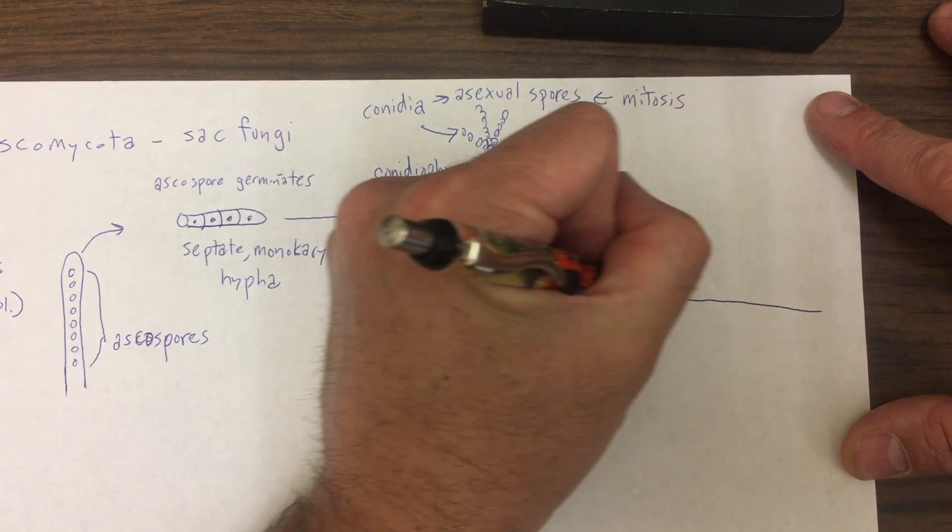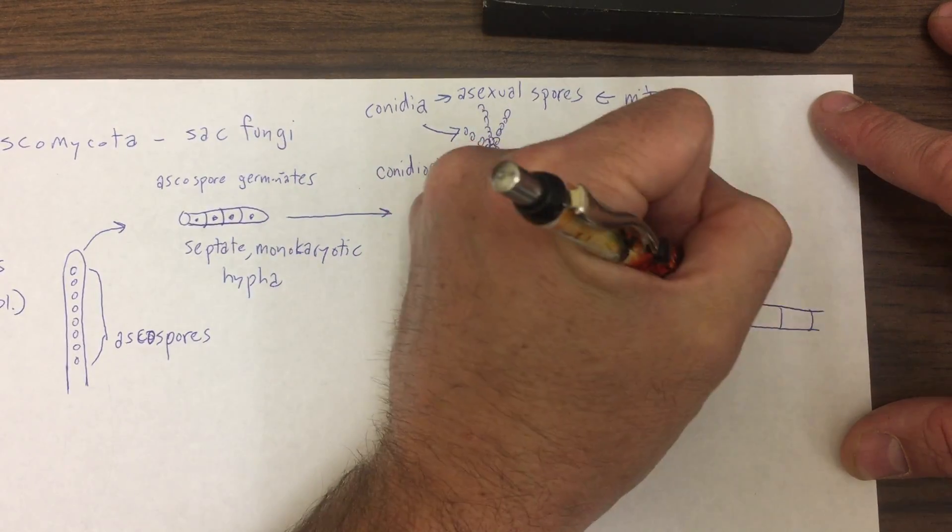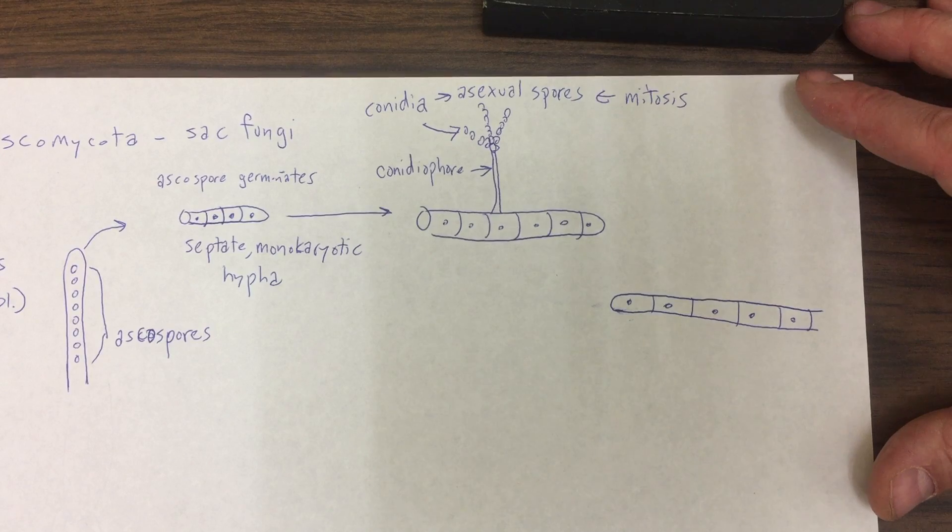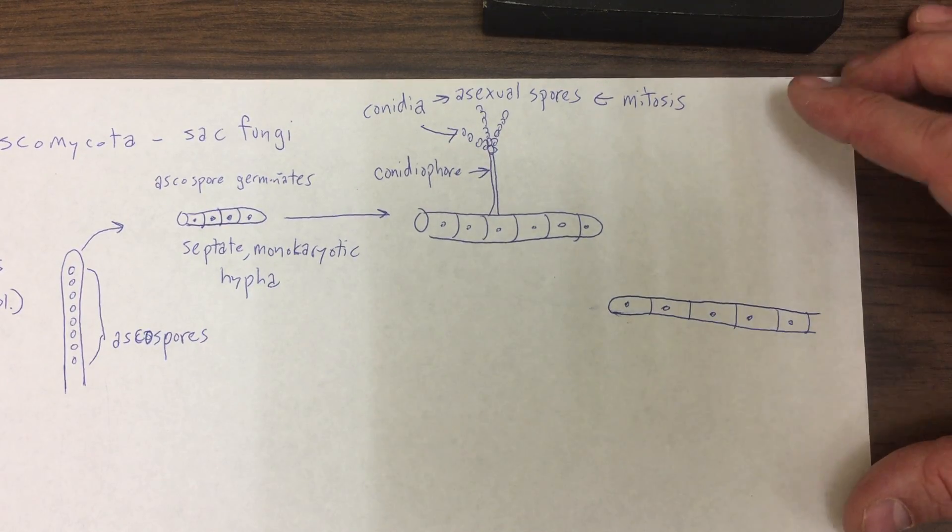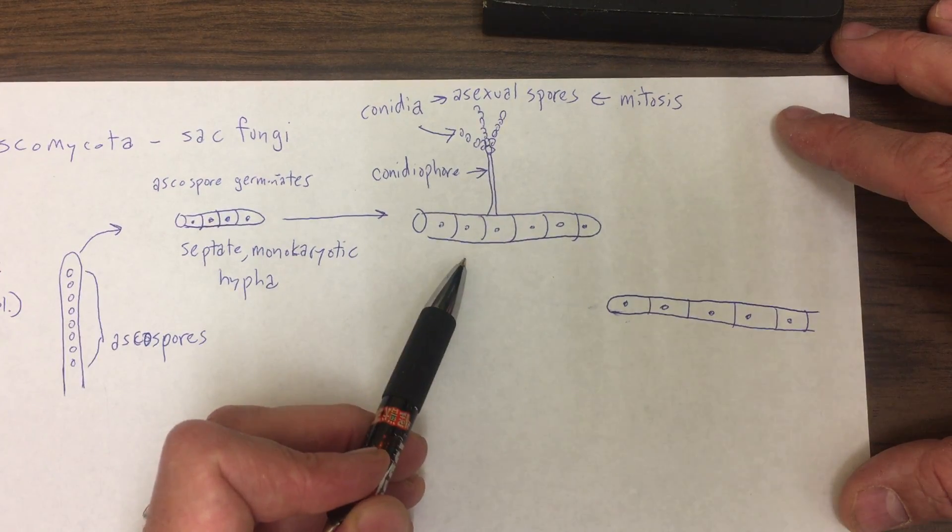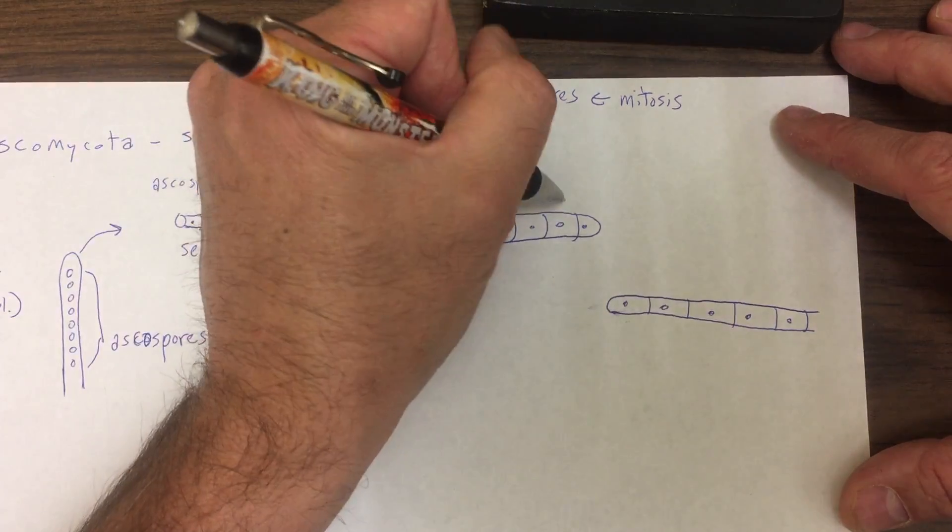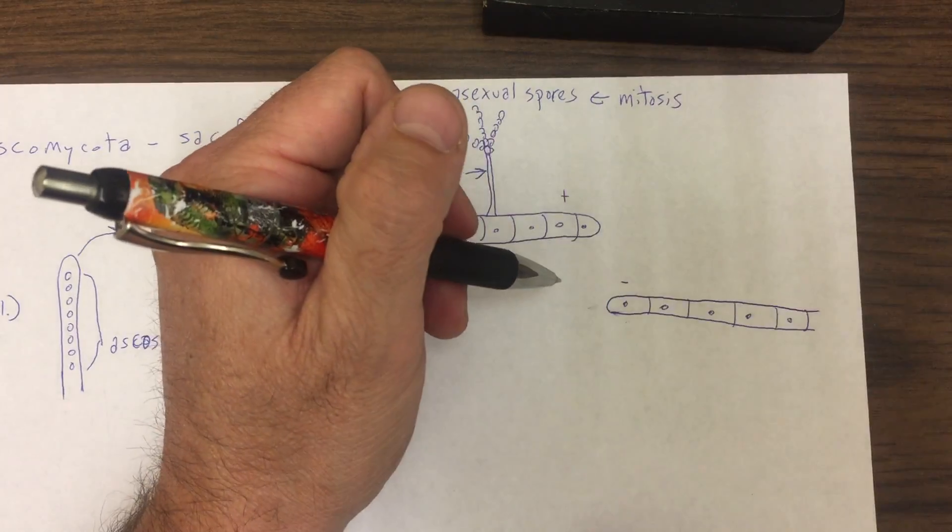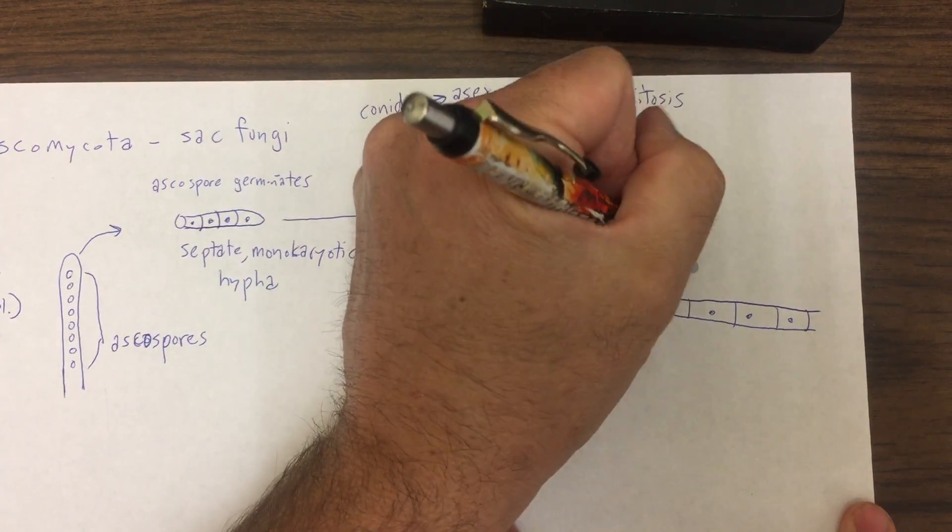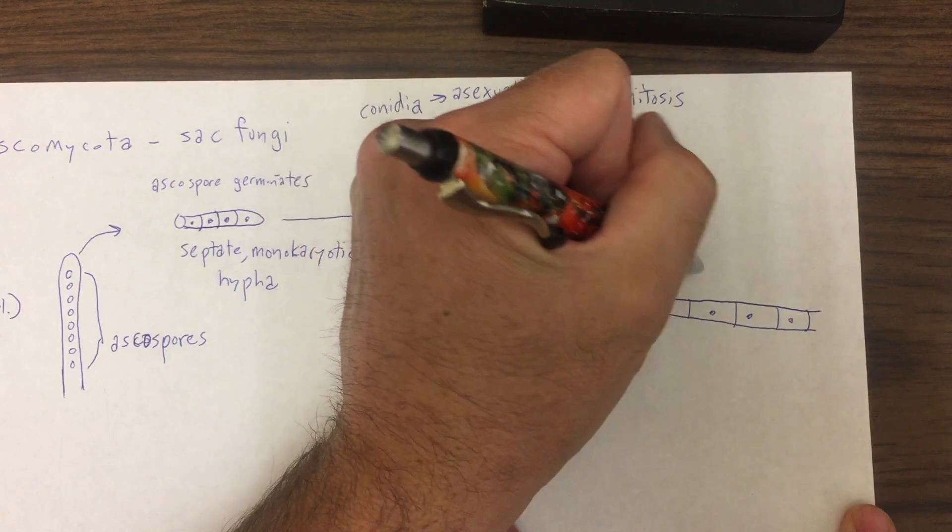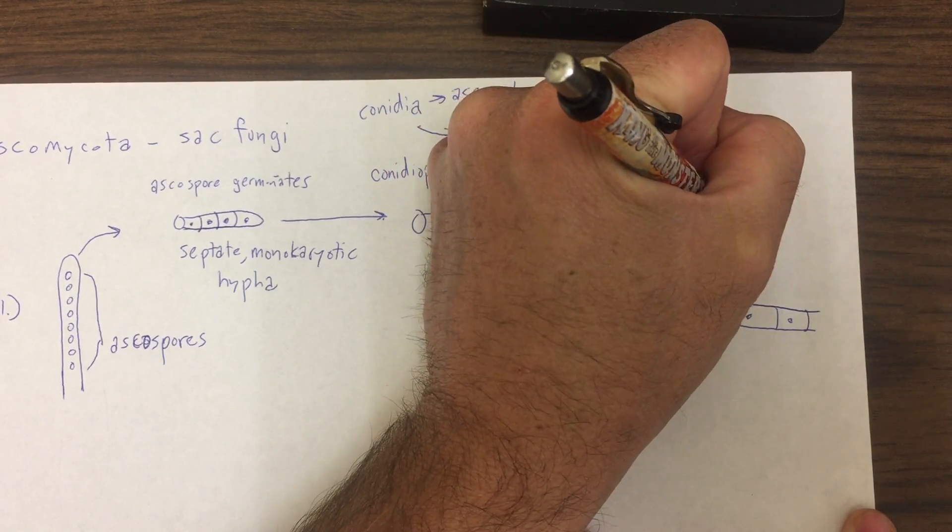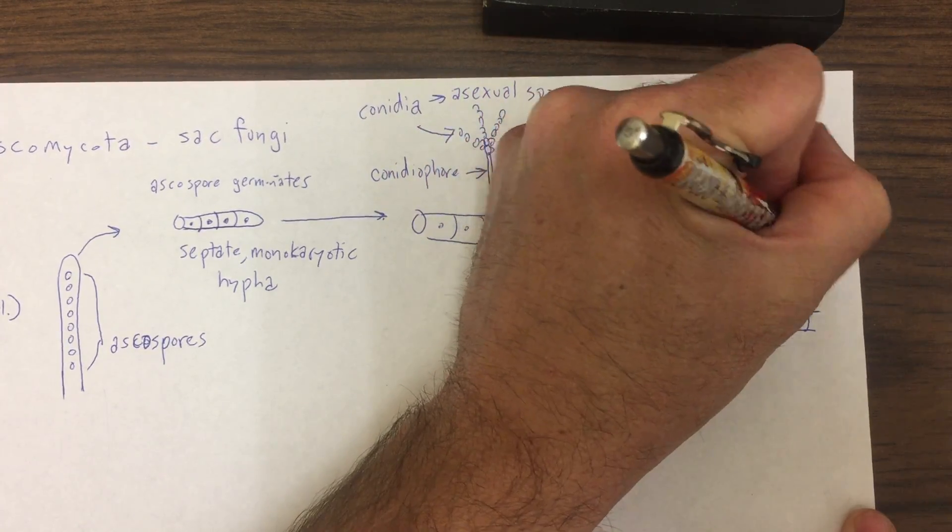And like in the basidiomycota, we can have a delay between the two parts of fertilization or syngamy. So we can have plasmogamy coming first and then karyogamy. We've got a monokaryotic hypha here, another monokaryotic hypha here. They're different mating types. And they can actually produce gamete-like structures, gametangia, or what they're called.